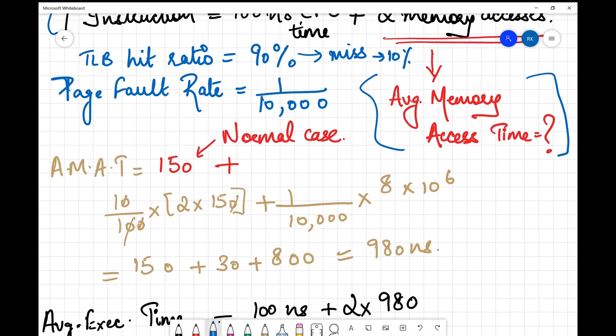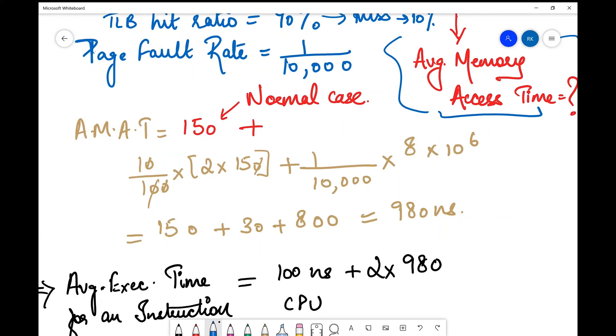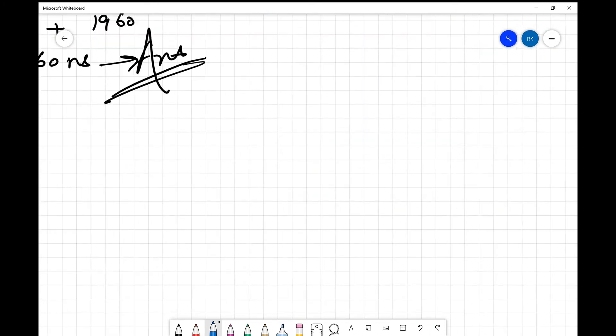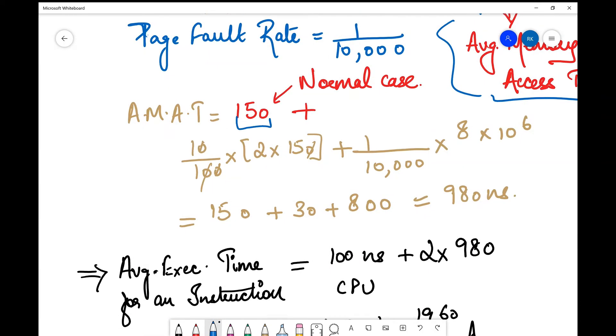We have TLB hit ratio as 90 percent, so miss ratio is 10 percent. Page fault rate is 1 by 10,000. Now I find the average memory access time. First, I write the time it takes in the normal scenario, which is 150 nanoseconds. When TLB miss or page faults occur, that's what I deal with in the second portion.